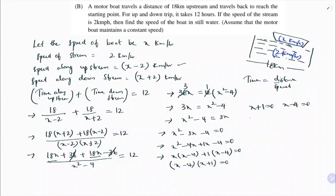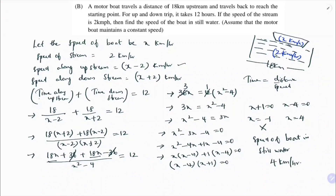So x = −1 or x = 4. Since speed cannot be negative, we discard x = −1. Therefore, the speed of the boat in still water is 4 kilometers per hour.